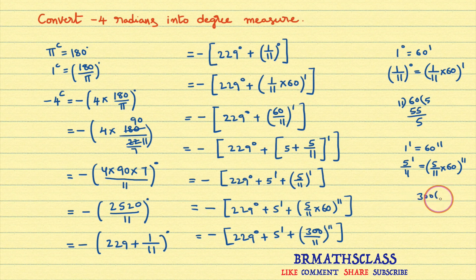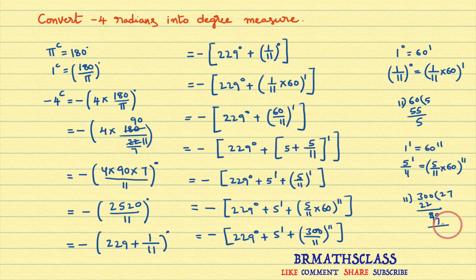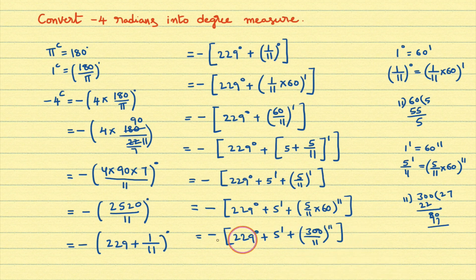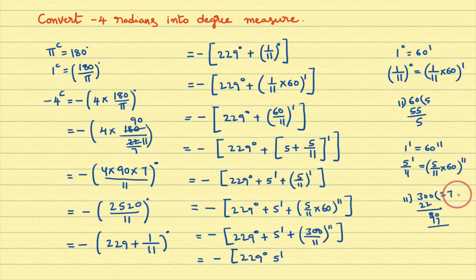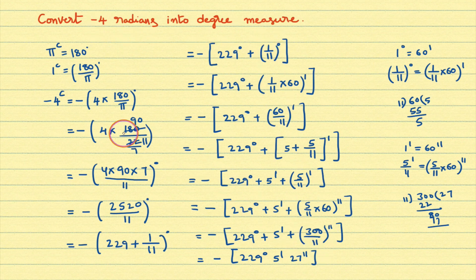Now divide 300 by 11: 11 times 2 is 22, 30 minus 22 is 8, bring down 0 to get 80; 11 times 7 is 77. Since we cannot split seconds further, 300 divided by 11 is approximately 27 seconds. So the final answer is minus 229 degrees 5 minutes 27 seconds approximately. That is, minus 4 radians equals minus 229 degrees 5 minutes 27 seconds approximately.